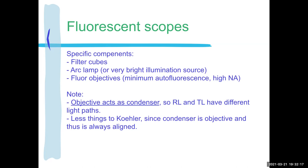We have a very bright source that is often an arc lamp — these days we're finally getting LEDs that are bright enough, which is a new thing. We have objectives specially designed for fluorescence: they don't have autofluorescence and they have a very high NA. They tend to be nicer, fancier objectives. With fluorescence, as you know, the objective acts as the condenser, so on the scope the reflected light and transmitted light have very different light paths. The reflected light path is the one for fluorescence.